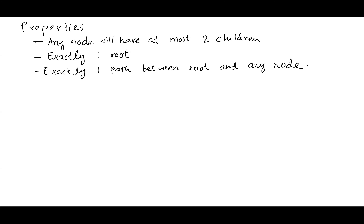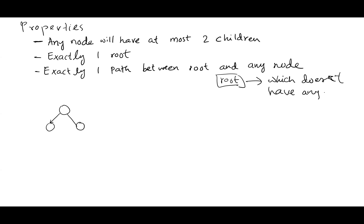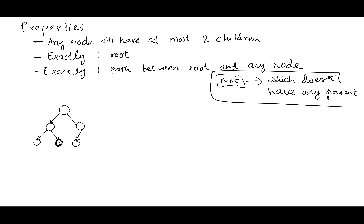Let's see what a binary tree looks like. If we look at this tree, the root is the node which doesn't have any parent. Here we have six nodes, and from the root to any node there is only one path. So we can say this is a binary tree.